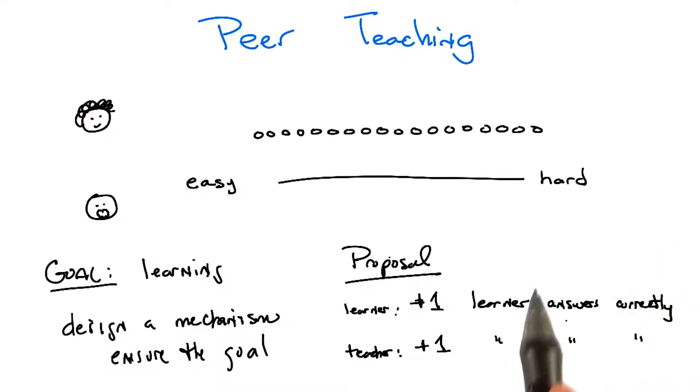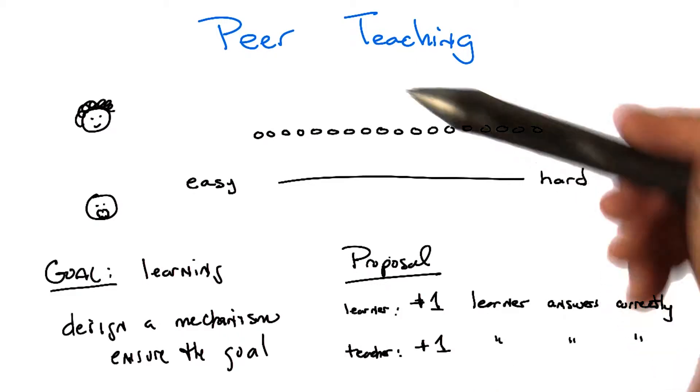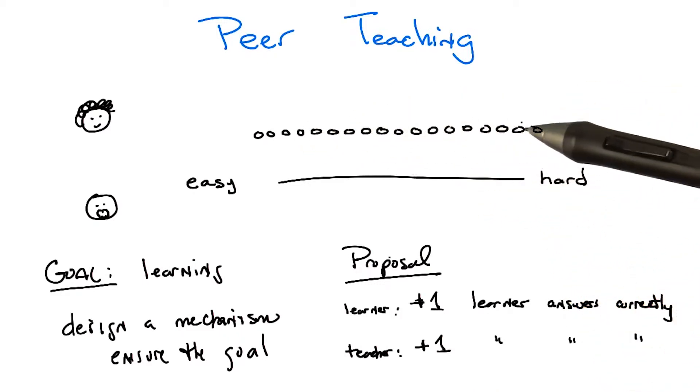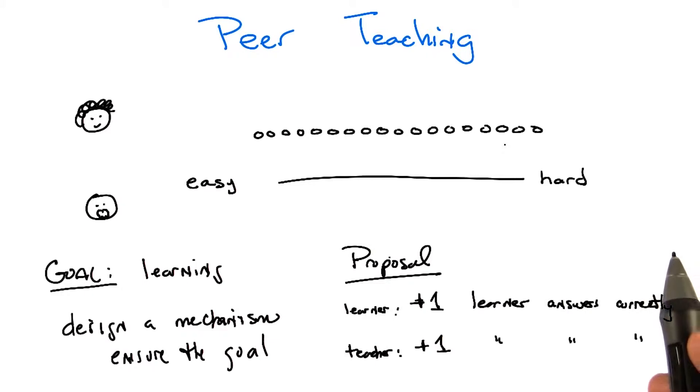And the teacher gets credit for demonstrating they at least know something. So what do you think is going to happen here? The learner's happy getting answers right, and the teacher's happy when the learner gets answers right. So they should work together to maximize, I guess not necessarily learning, but ask easy questions.